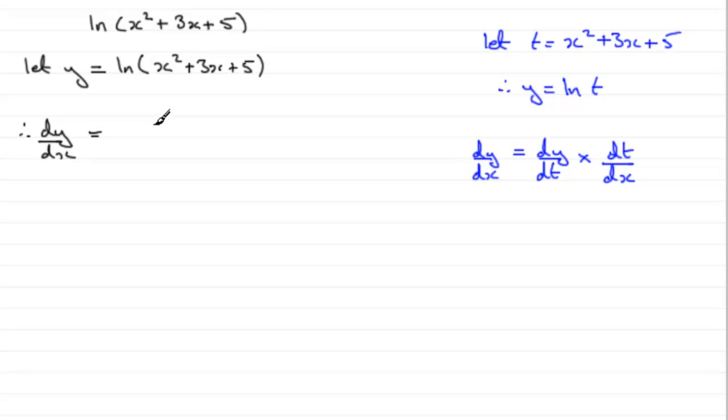This would be 1 divided by whatever t was. And t, we said, was x squared plus 3x plus 5. So this would be 1 over x squared plus 3x plus 5 in brackets.